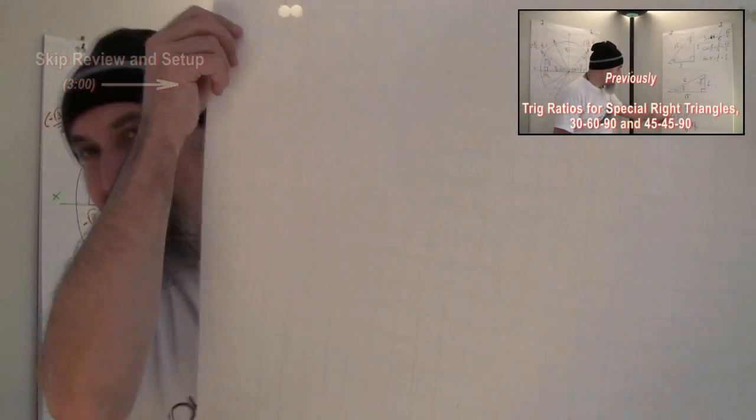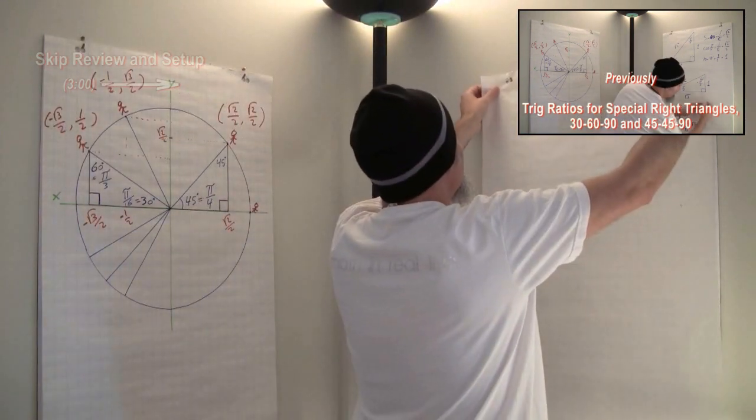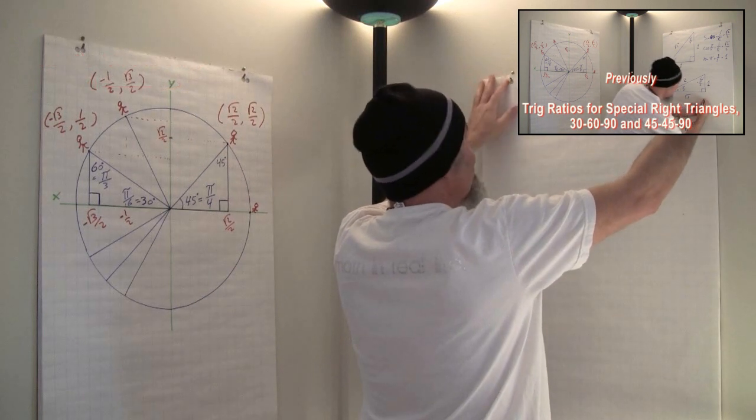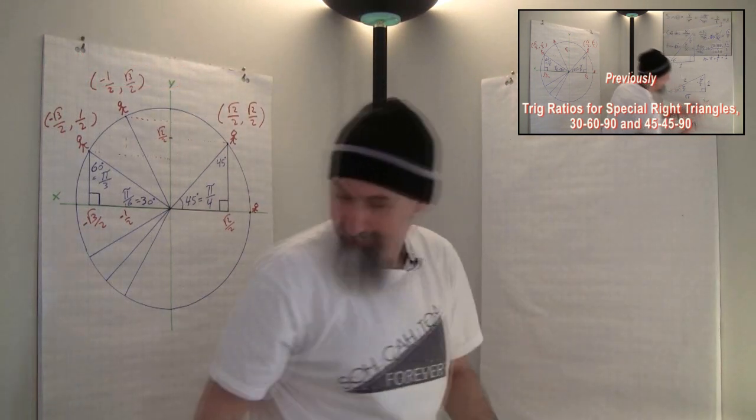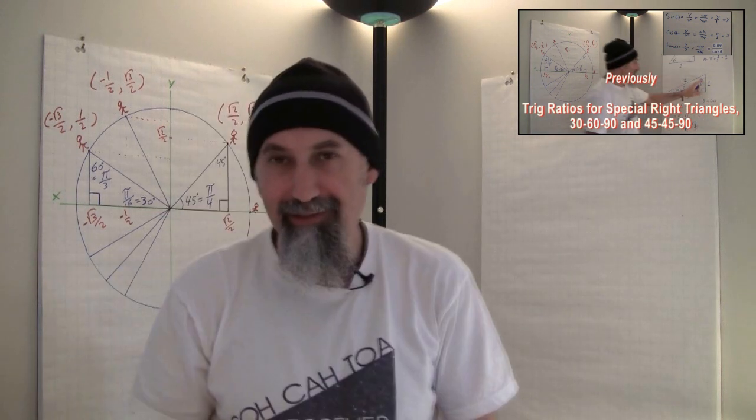Let's take one of our grid papers and put it on the side so it can be as accurate as possible. Let's do a little calculation — let's take a look at the similar triangles and convince ourselves that the trig ratios — sine, cosine, tangent — don't change no matter how big or small the triangle is, as long as the angles stay the same.